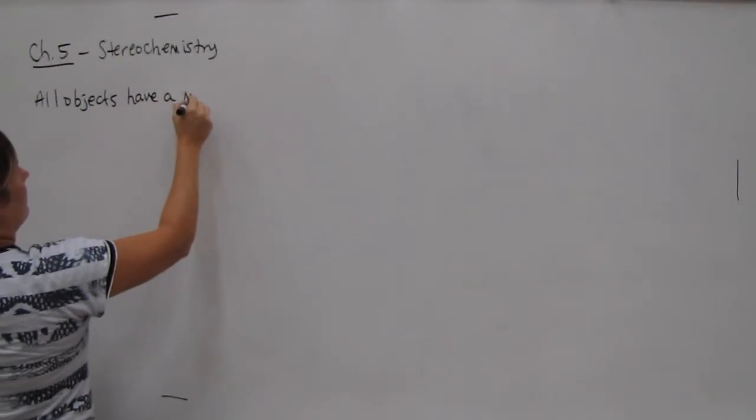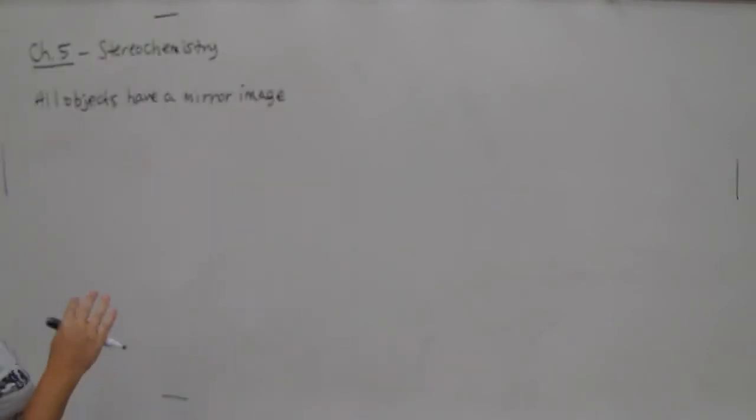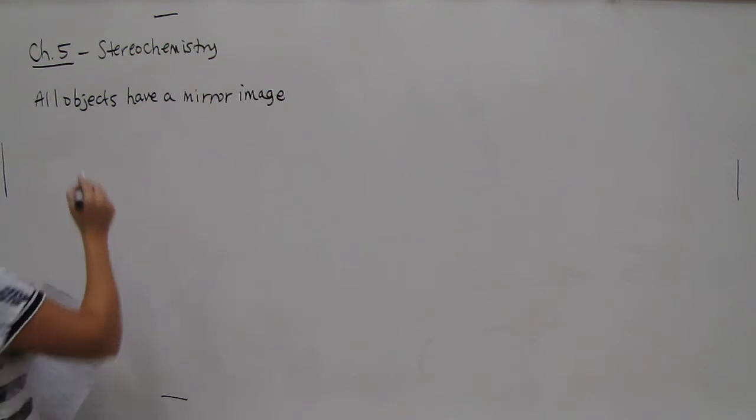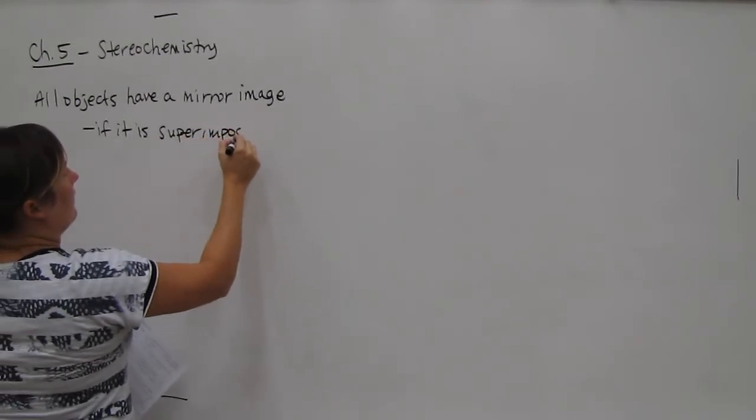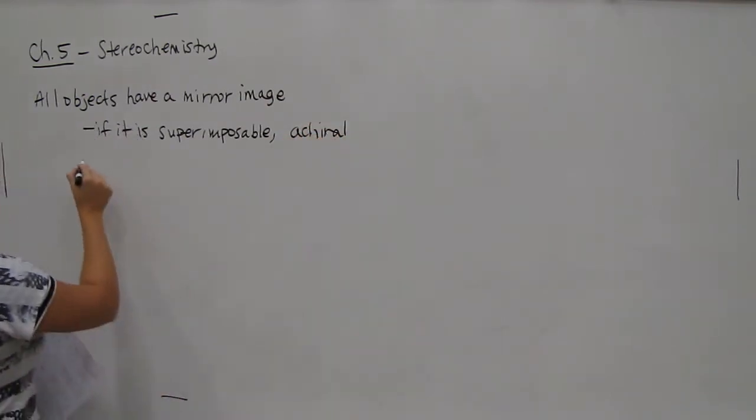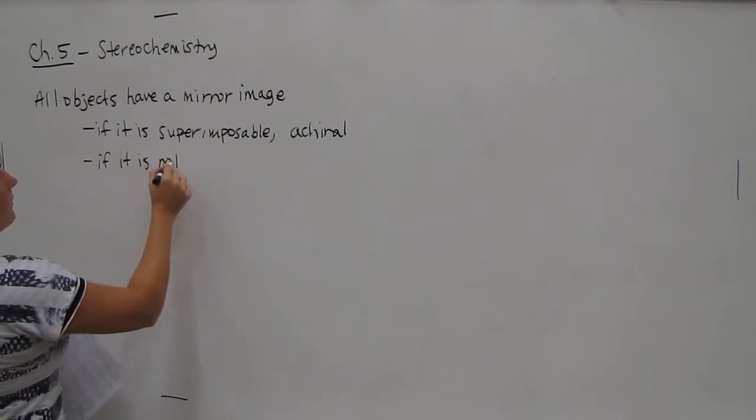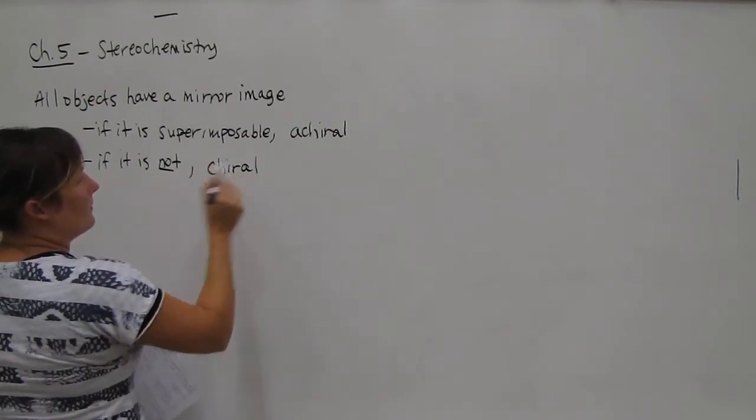All right, so we're going to be starting the review for Chapter 5, which is Stereochemistry. Let's start by saying that all objects have a mirror image. It's basically how this mirror image relates to the original object. If it is superimposable with the original, then the original object is achiral. If it is not superimposable with its mirror image, then the original and its mirror image are both chiral.